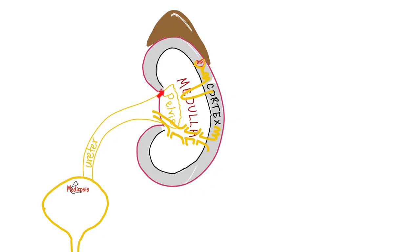Blood comes to the kidney via the renal artery. This blood gets filtered here in the glomerular capillary tuft, which lies inside the Bowman's capsule, as we have discussed before. Now we have a filtrate in the tubules. Good stuff gets reabsorbed back to the blood; bad stuff is secreted into the urine.